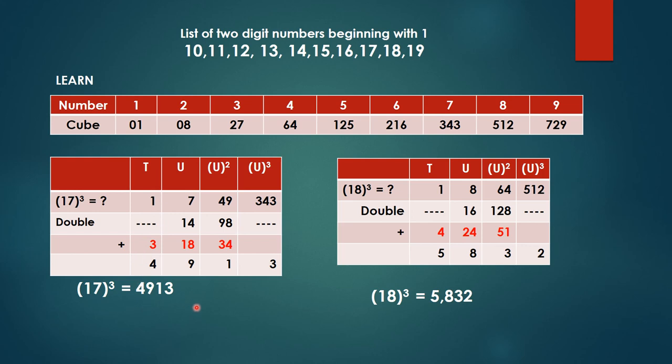So 3 plus 1 is 4. So 4, 9, 1, 3. So cube of 17 equal to 4913.